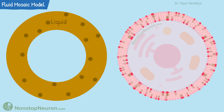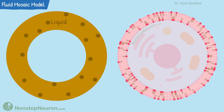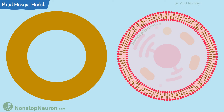And this is the crux of the fluid mosaic model. To summarize, biological membrane is a thin and strong layer of fluid surrounding the cells and organelles, and it is made up of amphipathic phospholipid molecules.